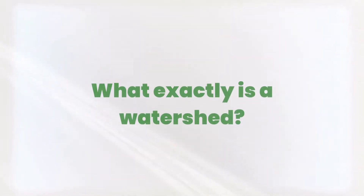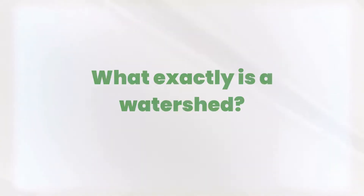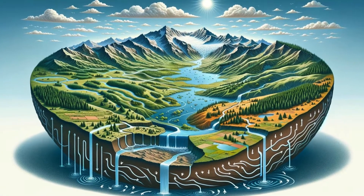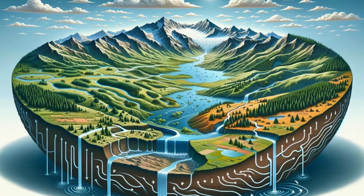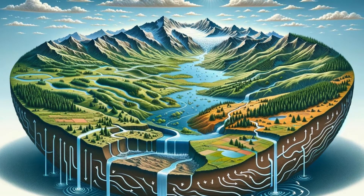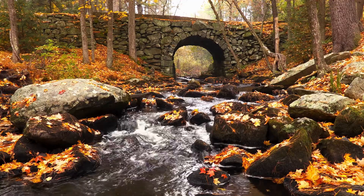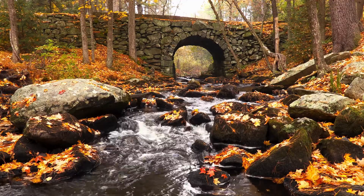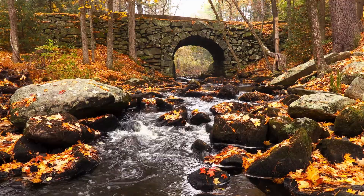Let's start with the basics. What exactly is a watershed? A watershed is like a big bowl that collects rainwater and snowmelt and drains it into rivers, streams, and lakes. Watershed management involves the sustainable management of these areas to ensure water quality and availability.